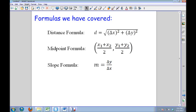For any form of coordinate geometry proof, there are three formulas you have to be familiar with: distance formula, midpoint formula, and slope formula.